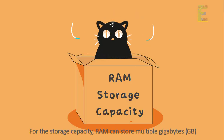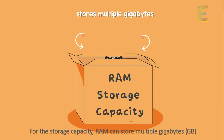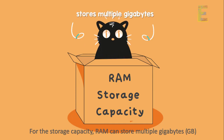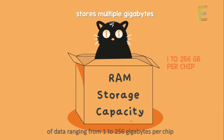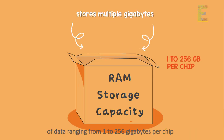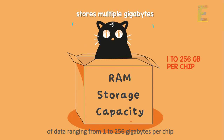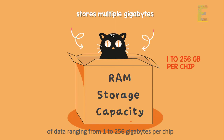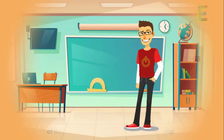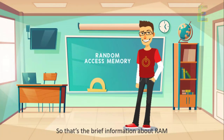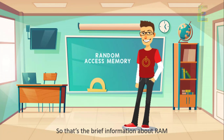For storage capacity, RAM can store multiple gigabytes of data, ranging from 1 to 256 gigabytes per chip. So that's the brief information about RAM.